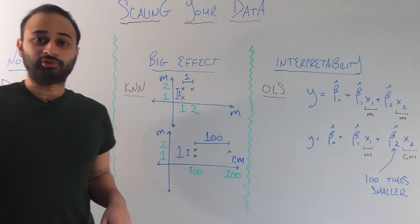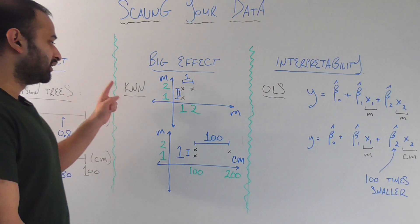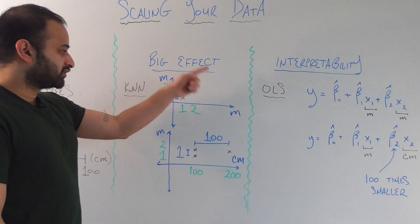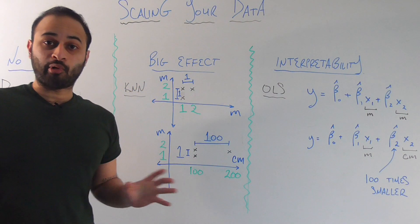Here's an example of the opposite case where it is very, very much affected by the scaling of your data. And this is k-nearest neighbors. So let's say we have this small picture. Maybe it's a little bit crowded, but I'll try to point to everything.